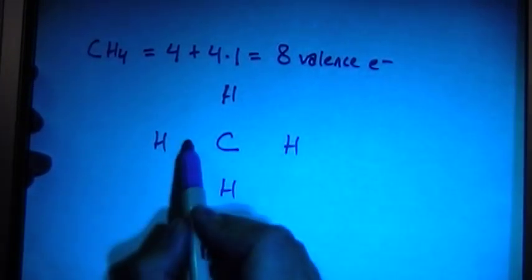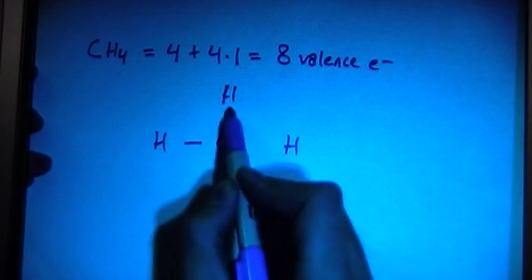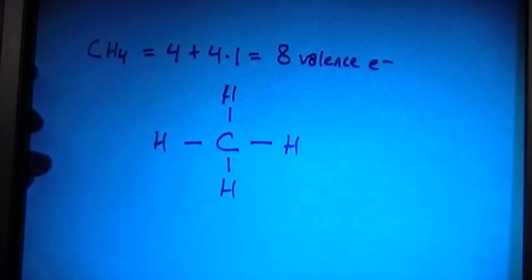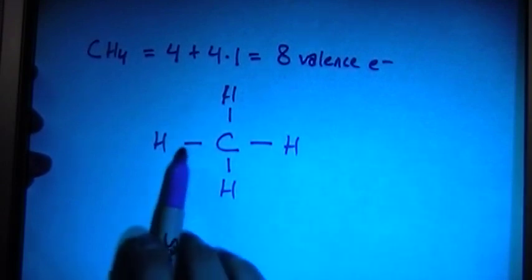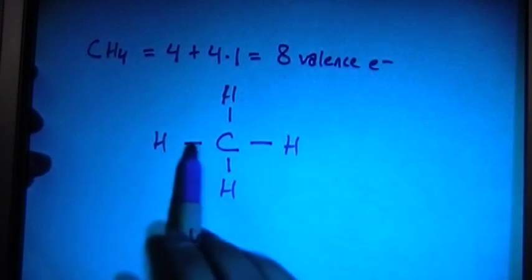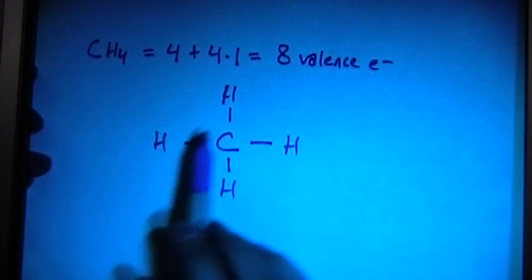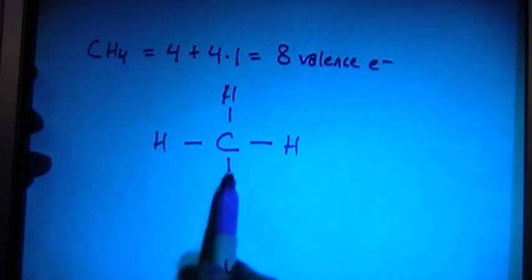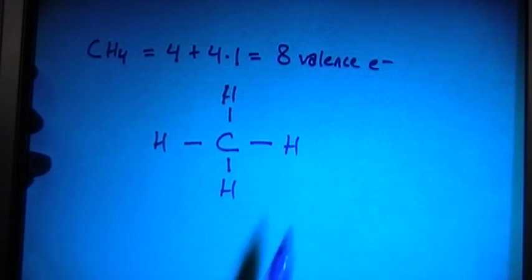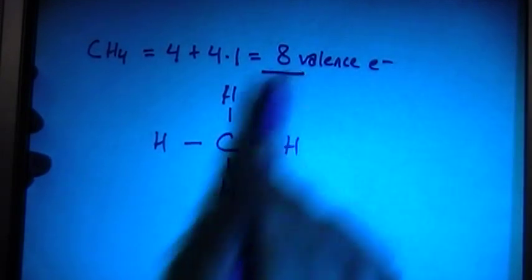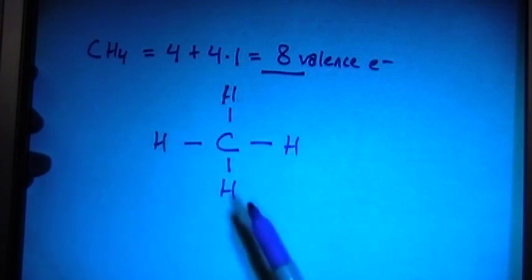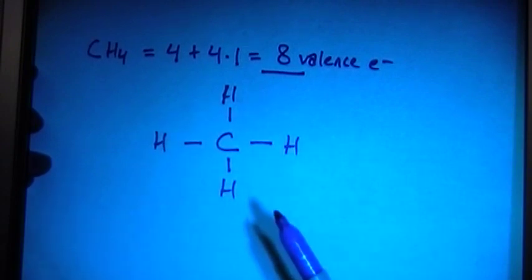Now let's go ahead and connect them all with single bonds. Since each bond has two electrons, that's two, four, six, and eight electrons, which is the total that we had. So this is actually going to be the entire structure.